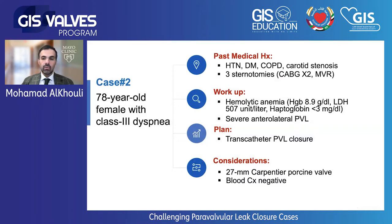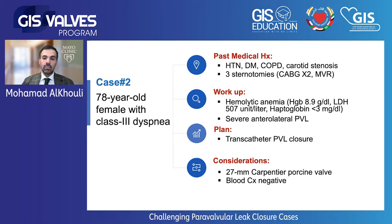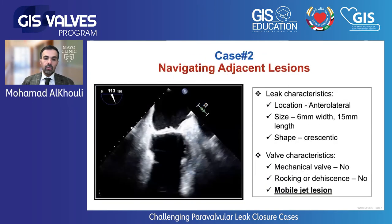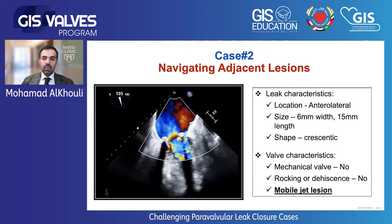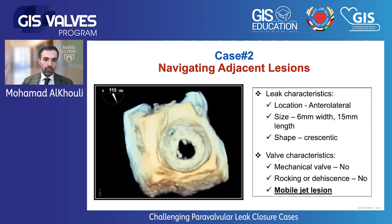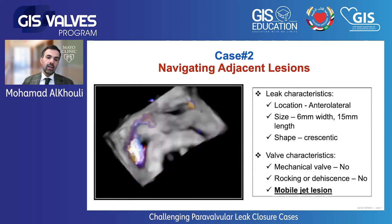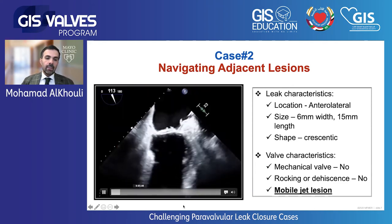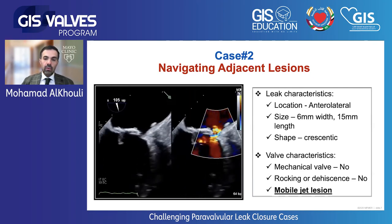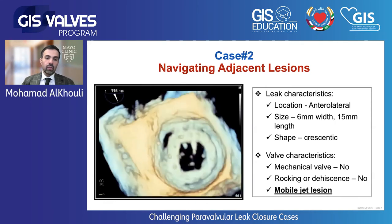This first case illustrated an integrated technique to treat complex aortic paravalvular leak. Let's switch now to mitral paravalvular leak. This is a 78-year-old female with class 3 dyspnea. She has had three sternotomies, one involving a mitral valve replacement with a 27-millimeter Carpentier porcine valve. She presented with hemolytic anemia and severe anterolateral paravalvular leak. Given three prior sternotomies, she was not a surgical candidate. We planned transcatheter closure and did blood cultures — they were negative. During evaluation, we found a weird-looking lesion at the lateral wall of the atrium that had not been seen on outside images and was very close to where the leak is.